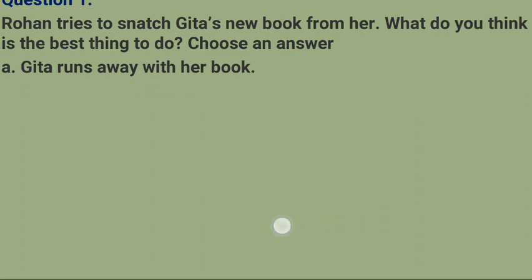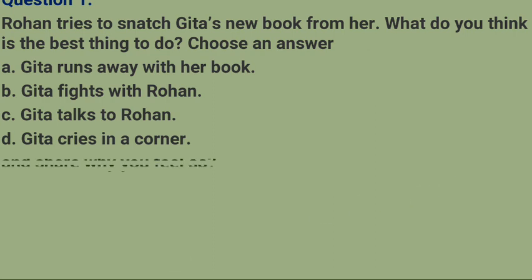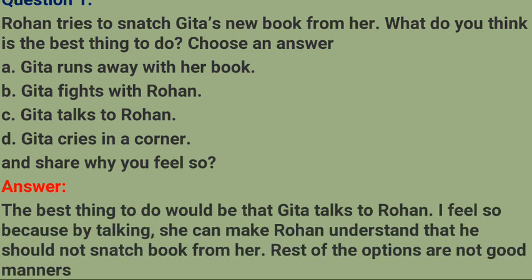Options: Gita runs away with her book; Gita fights with Rohan; Gita talks to Rohan; Gita cries in a corner. The best thing to do would be that Gita talks to Rohan — Gita Rohan se baat kare. I feel so because by talking she can make Rohan understand that he should not snatch her book. Baaki sabhi options achhe manners ko nahi batate.